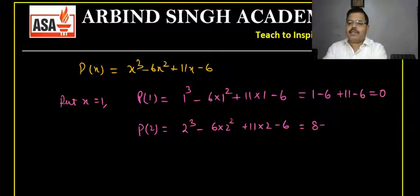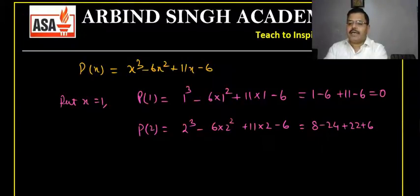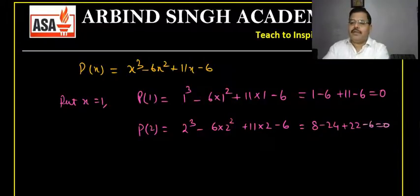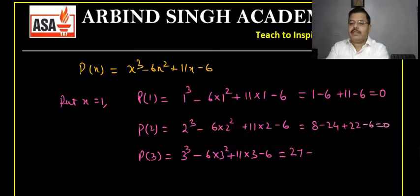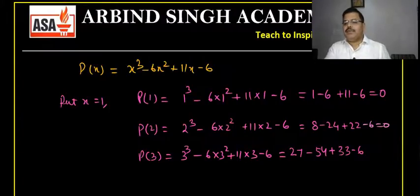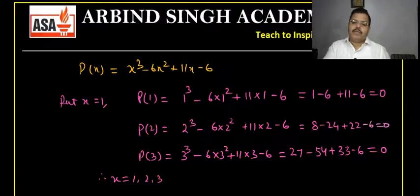Check x = 3: p(3) = 27 − 54 + 33 − 6 = 60 − 60 = 0. Therefore x = 1, 2, and 3 are all zeros of the polynomial p(x) = x³ − 6x² + 11x − 6.